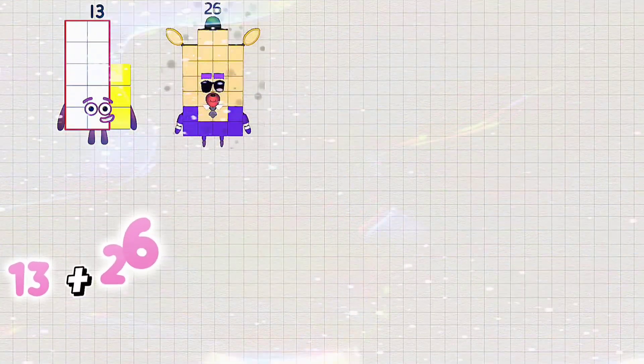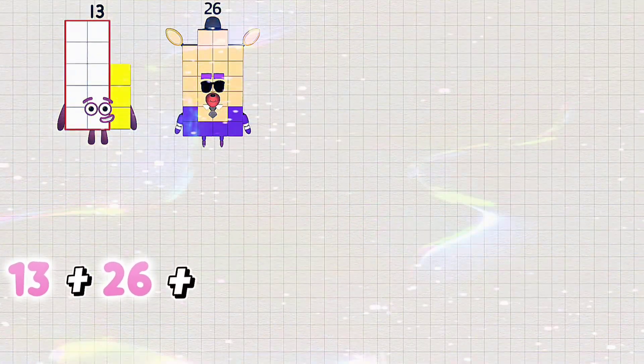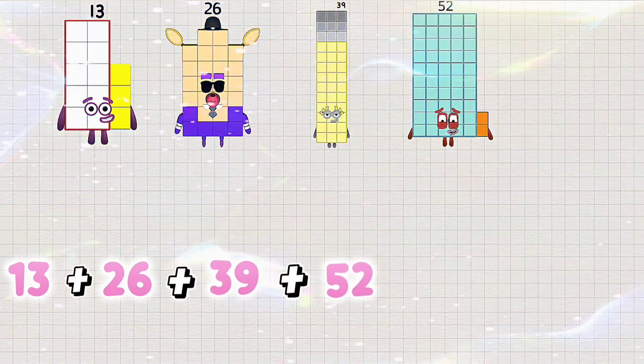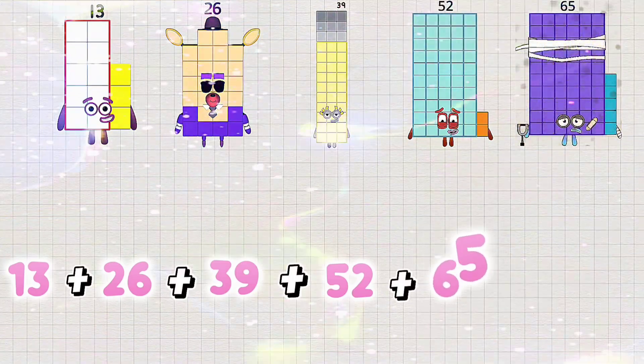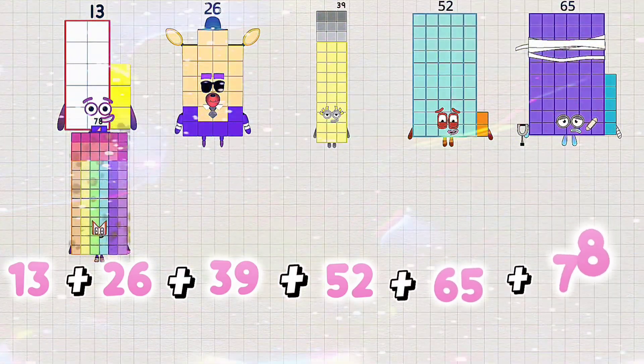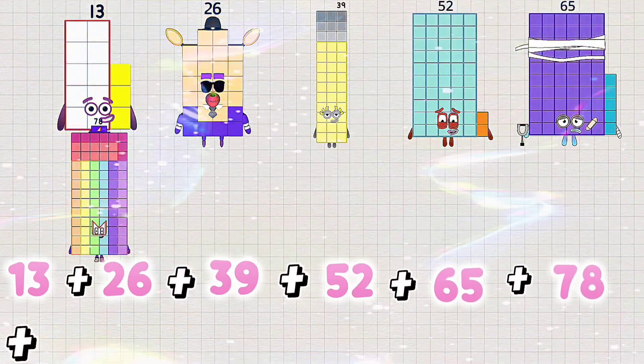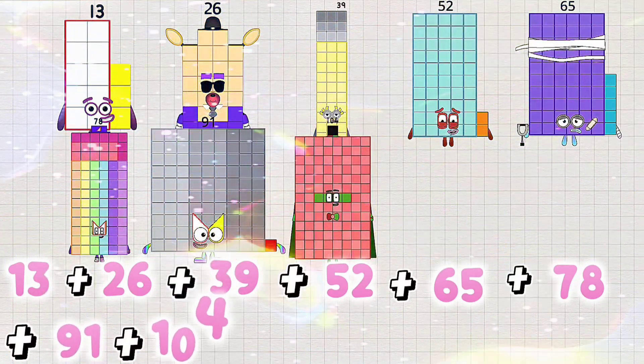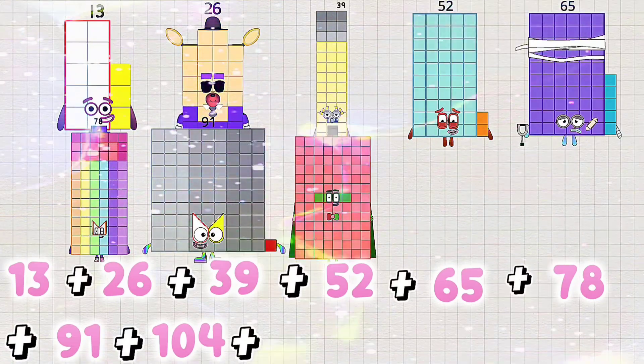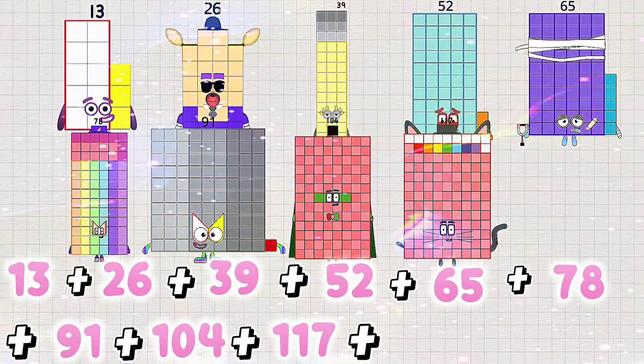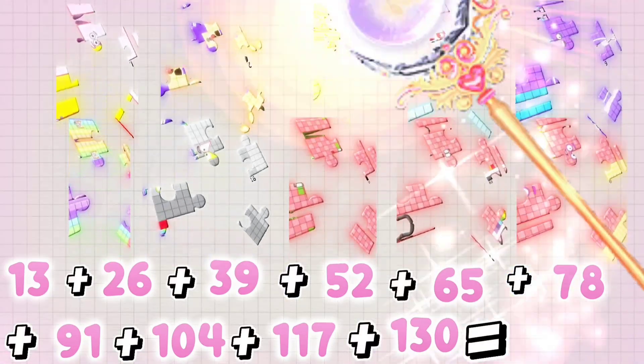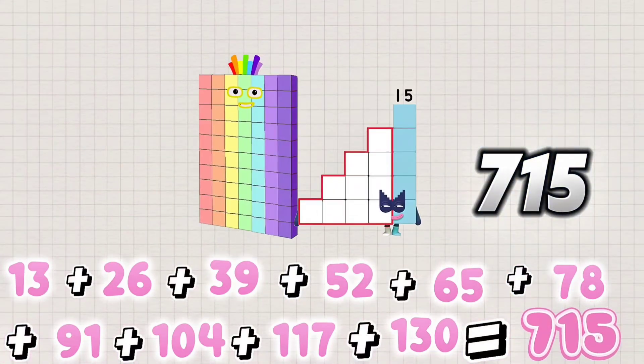13 plus 26 plus 39 plus 52 plus 65 plus 78 plus 91 plus 104 plus 117 plus 130 is equals to 715.